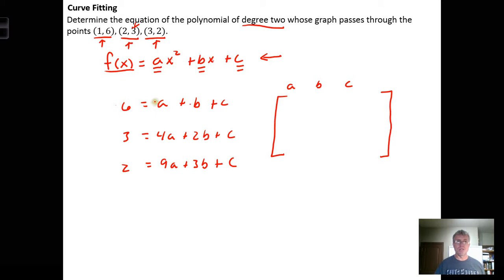The coefficients are 1, 1, 1 and the constant is 6. The second row: coefficients are 4, 2, and 1, and the constant is 3. For the last one, the coefficients are 9, 3, and 1, and the constant is 2.